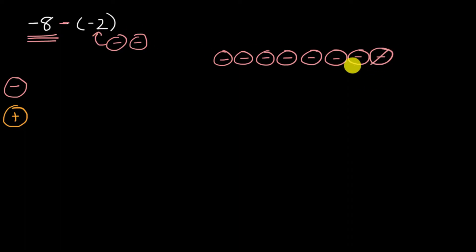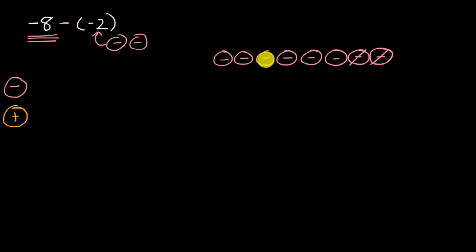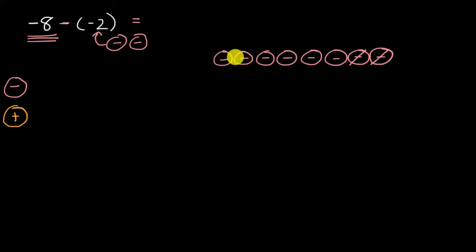So let's do that. How many negative number chips are we left with? We have one, two, three, four, five, six. Is that going to be six or negative six? Well, these are negative number chips, so this is going to be equal to negative six.